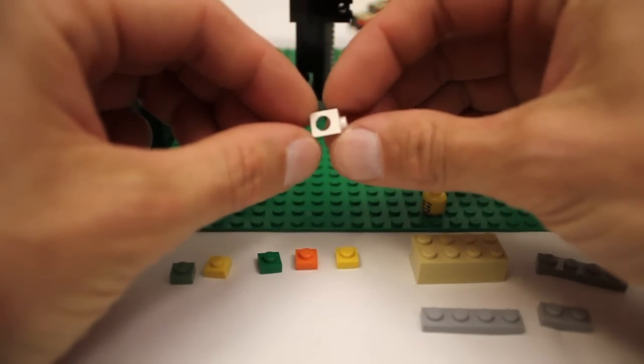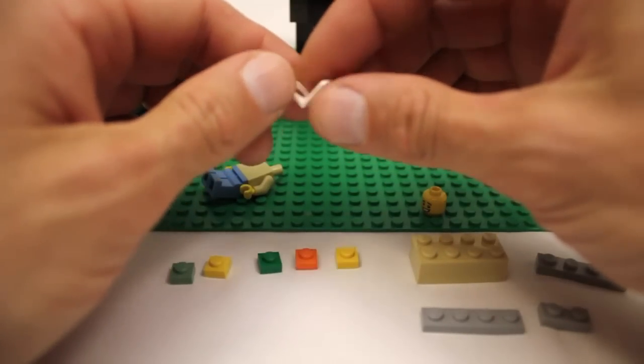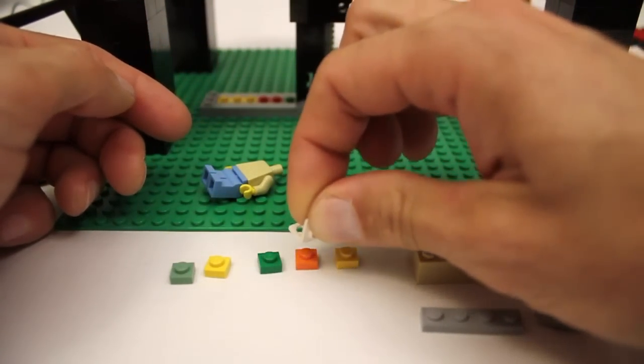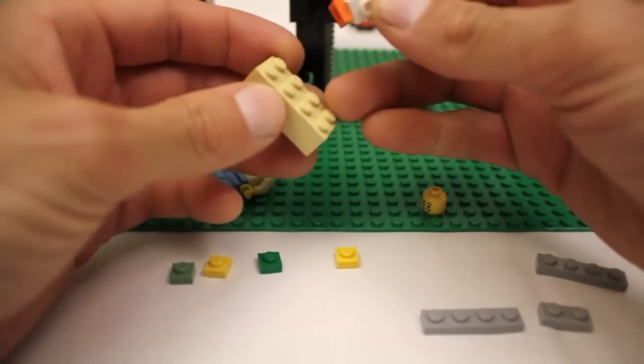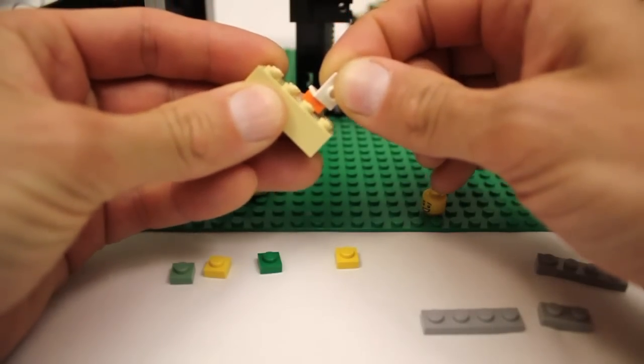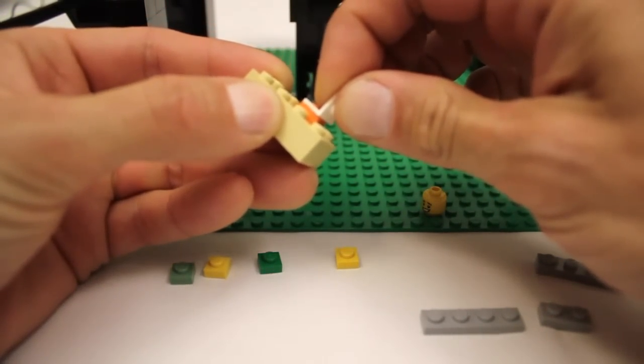It's the diameter of a stud but only about half the thickness of one, which means that the clutch power between it and the stud is strong enough to pull a piece up off the table. But when I attach that piece to another piece, the clutch power between the pieces is stronger, so when I pull it off, the piece gets left behind.